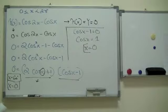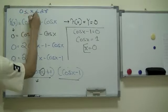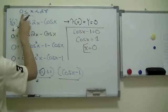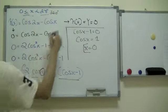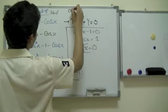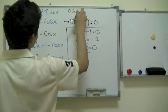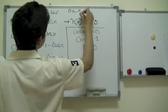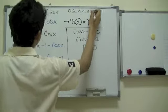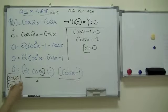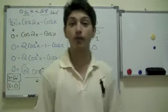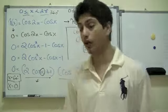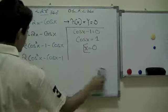We just found out the zeros of this function. Since X lies between greater than or equal to zero and less than 2 pi, which is 360 degrees, both answers are valid. There are two possible values that X can take on in this equation. Now what we are going to do is basically take another example just like this to get the hang of it.